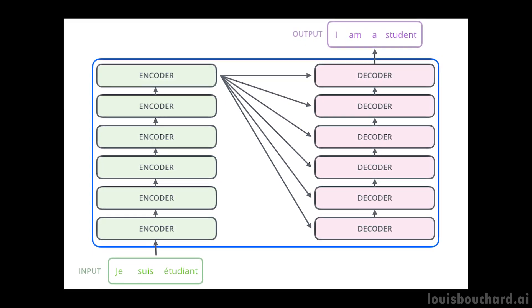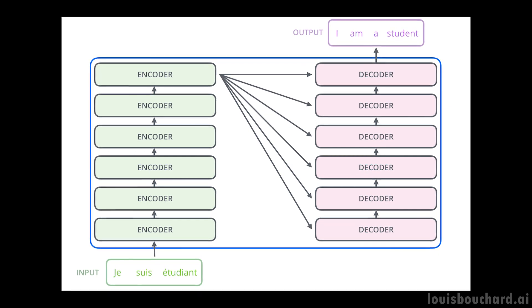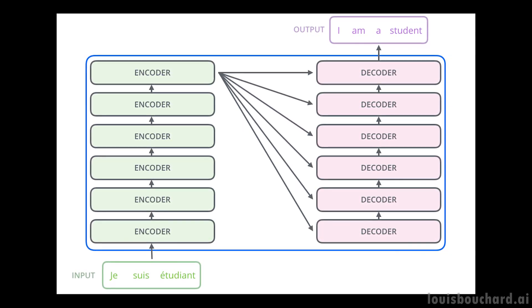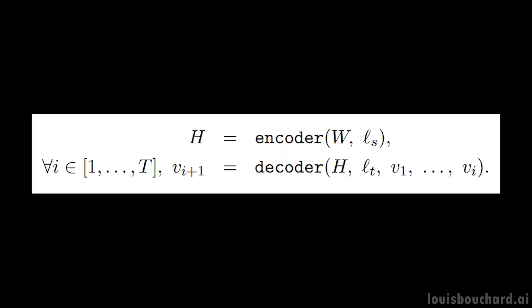What's new is the modifications they've done to the model to scale up to so many different languages instead of being limited to only one. The first modification is adding a variable identifying the source language of the input, taken from the language detector we just discussed. This will help the encoder do a better job for the current input language.